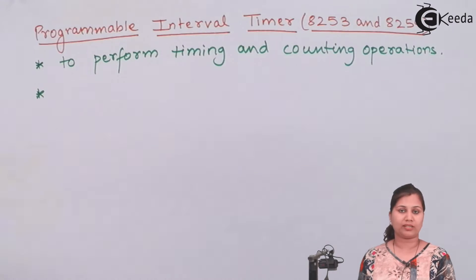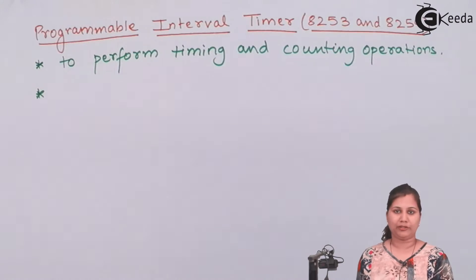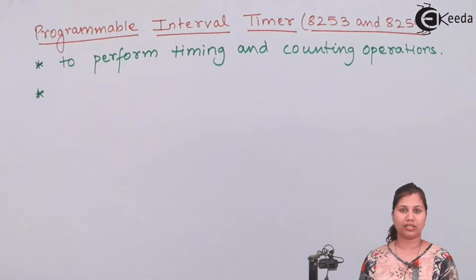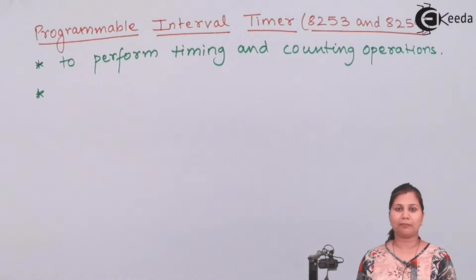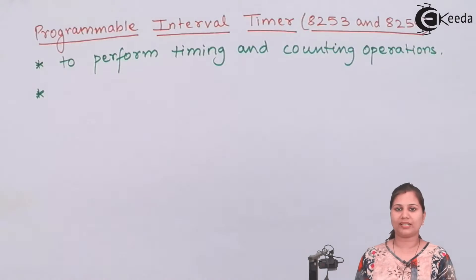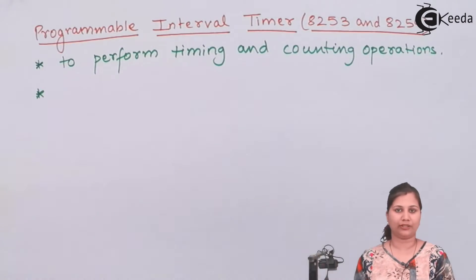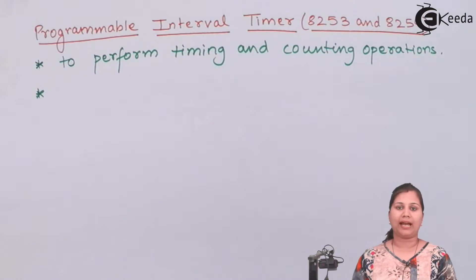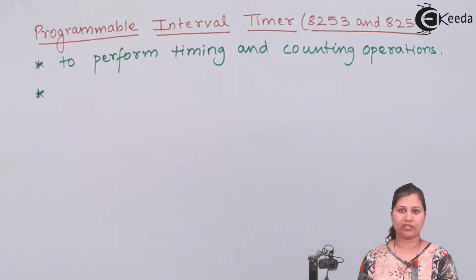Every time the microprocessor wants this time delay through software, we can write a subroutine, and after completion of one task, the microprocessor executes that subroutine for some time delay and then executes the second task. But every time the microprocessor has to call that subroutine, execute instructions, and load the count — in this way the microprocessor is busy and cannot perform any other task in between. The solution is to use external timers 8253 and 8254, which provide the time delay so the microprocessor need not do any work, and can perform any other task during that delay.